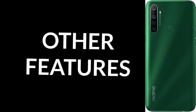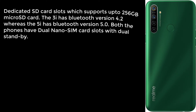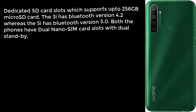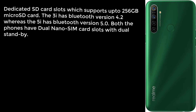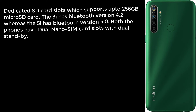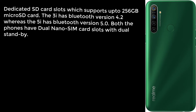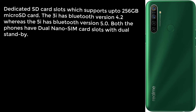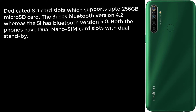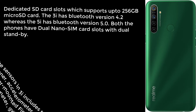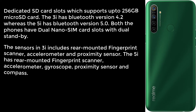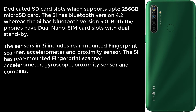For other features, both phones come with dedicated SD card slots supporting up to 256 GB microSD cards. The 3i has Bluetooth 4.2 whereas the 5i has Bluetooth 5.0. Both phones have dual nano SIM card slots with dual standby. The sensors on the 3i include a rear-mounted fingerprint scanner, accelerometer, and proximity sensor.